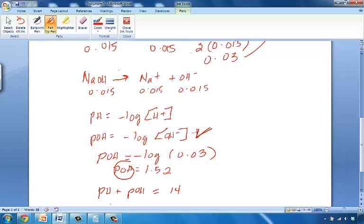Since we know POH is 1.52, we know that. We can plug that in. So pH plus 1.52 is 14. 14 minus 1.52 should give us pH. So 14 minus 1.52 gives us 12.48. And that is the pH of the solution.